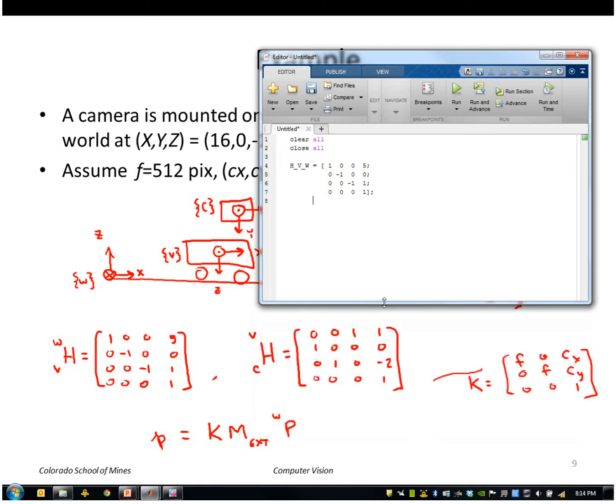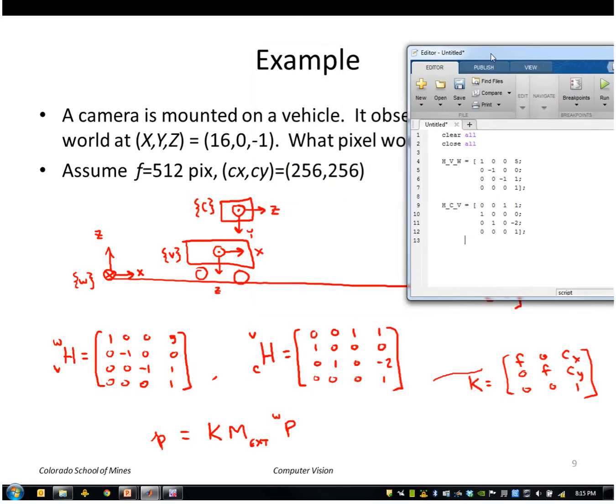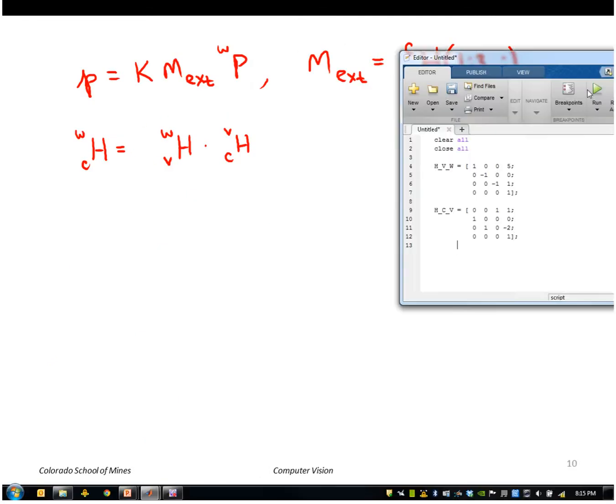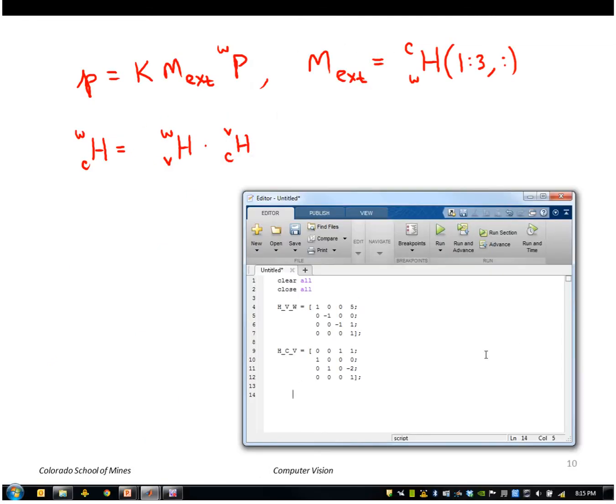The transformation matrix from camera to vehicle is 0, 0, 1, 1, 1, 0, 0, 0, 0, 0, 1, 0, minus 2, and then 0, 0, 0, 1. Now I can go ahead and multiply those two together as shown here. So that will become H from camera to world is H from vehicle to world times H from camera to vehicle.